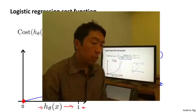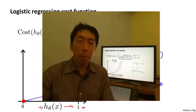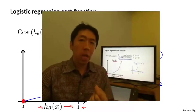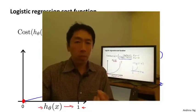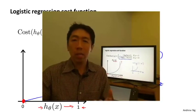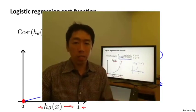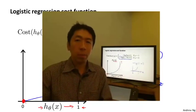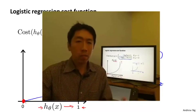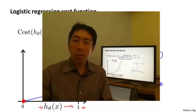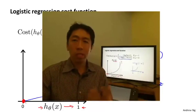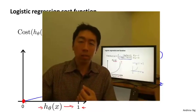In this video we've defined the cost function for a single training example. The topic of convexity analysis is beyond the scope of this course, but it is possible to show that with our particular choice of cost function, this gives us a convex optimization problem, so J of theta will be convex and local-optima free. In the next video, we'll take these ideas and develop the cost function for the entire training set, find a simpler way to write it, and work out gradient descent to give us our logistic regression algorithm.